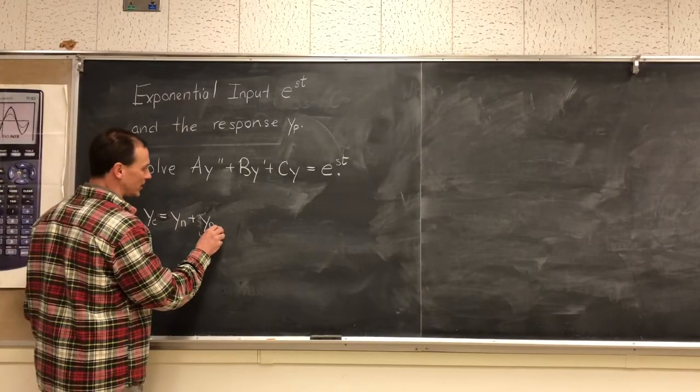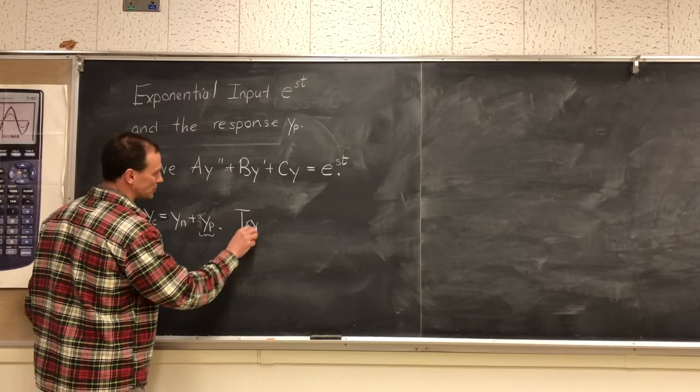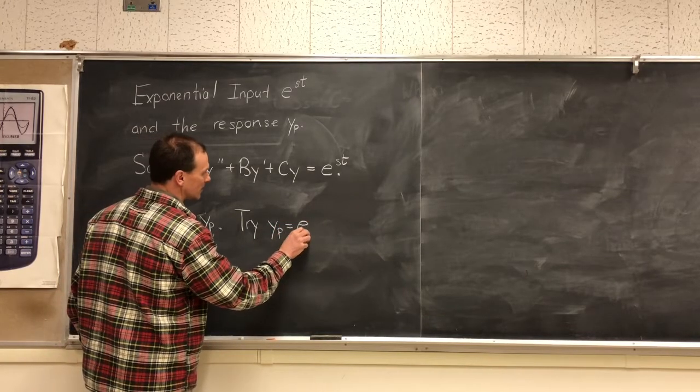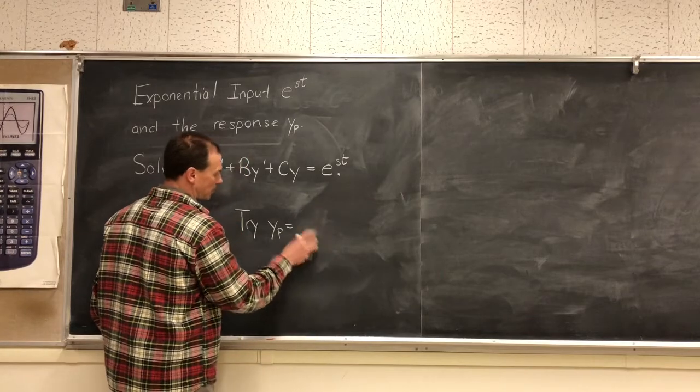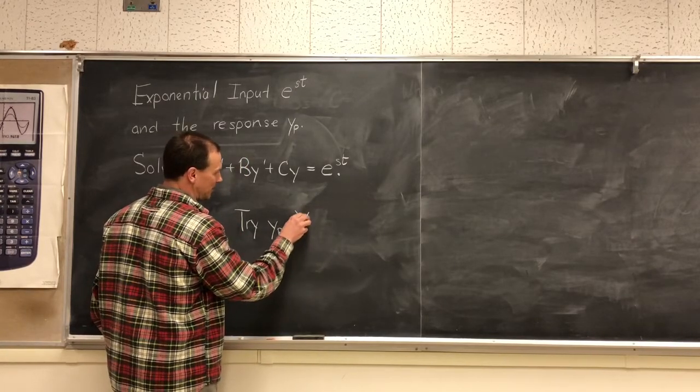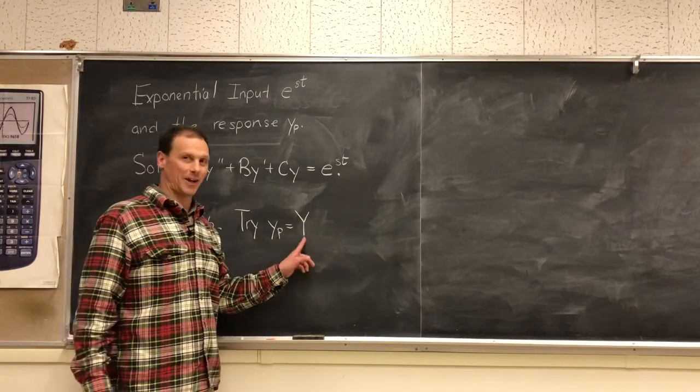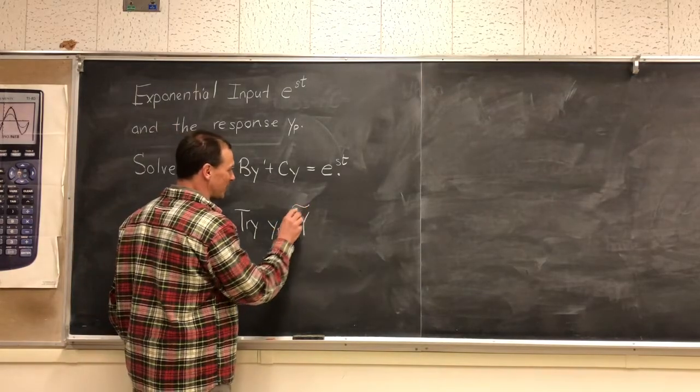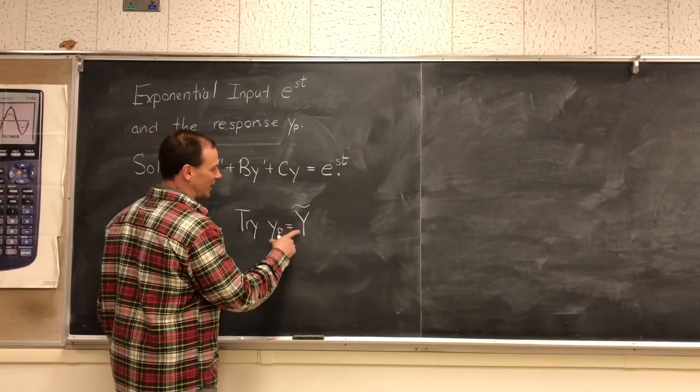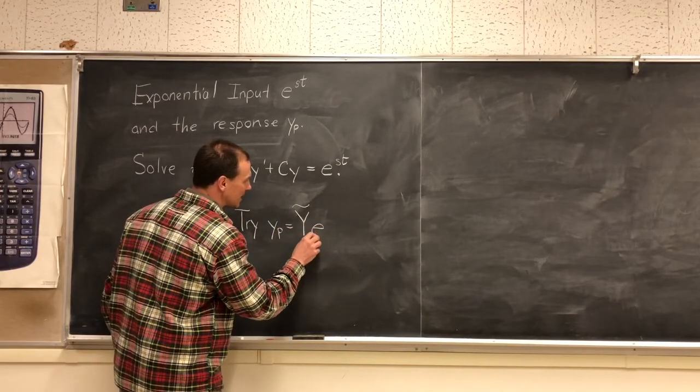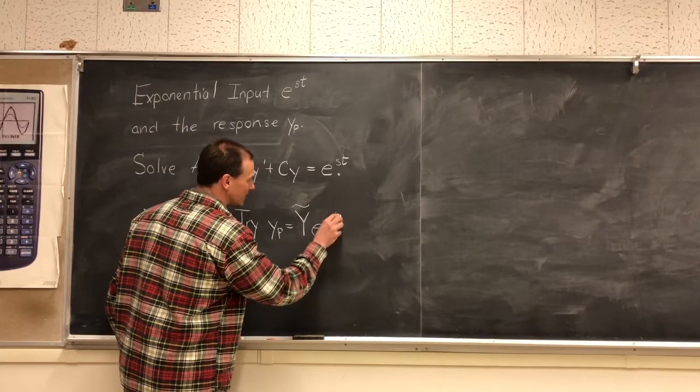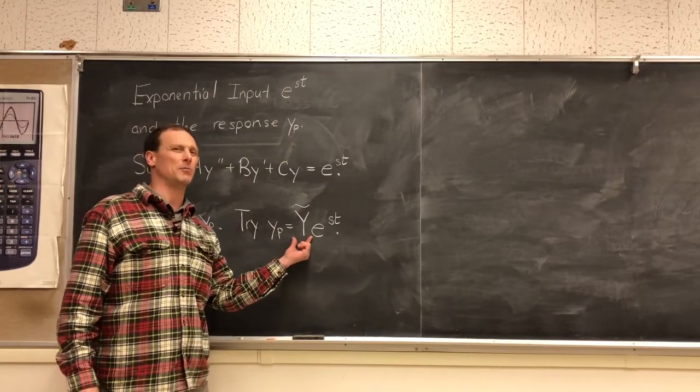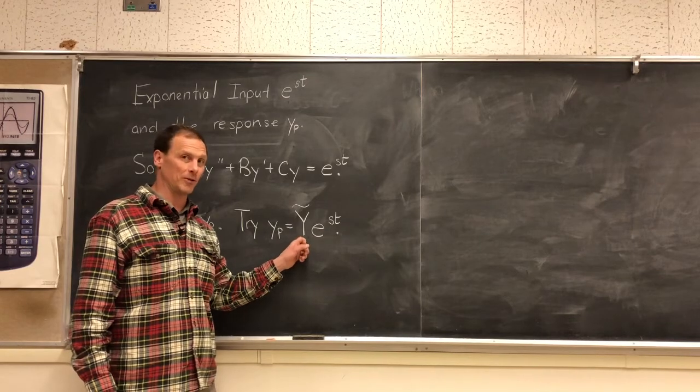So here we go. We're going to try our y particular as some multiplier—if my penmanship was consistent this would always be a capital Y, but just in case I'm going to put a tilde over it—capital Y tilde times e to the st. We think our solution is going to look like e to the st with some kind of multiplier, and our first goal is to figure out what this multiplier really is.